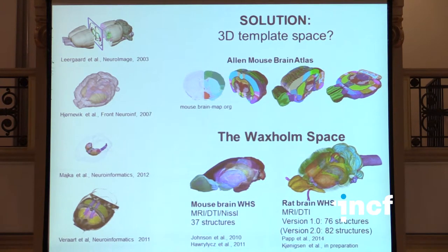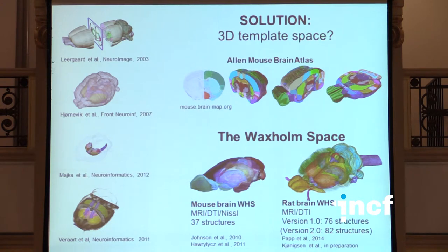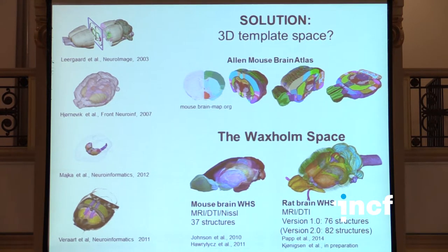At the moment we have both a voxel space template and an atlas for the mouse brain, based on MRI, DTI, and coronal sections, with 37 delineated structures. Recently, since earlier this year, we also have the rat brain voxel space atlas based on MRI, DTI, and high-resolution images, where 76 structures have been delineated, and in the next phase additional structures will emerge.